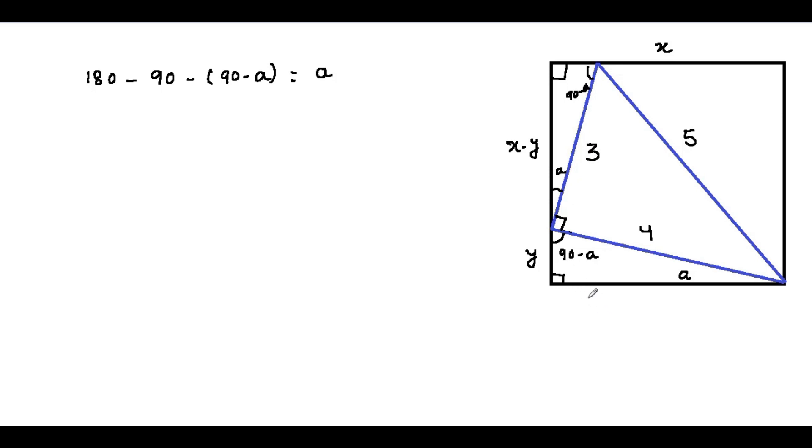Now we use the property that these two triangles are similar, therefore the ratio of their base to hypotenuse will be equal. So (x minus y) divided by 3 must equal x divided by 4.